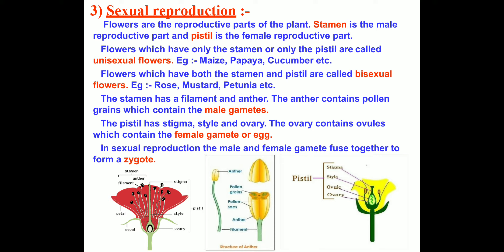Flowers which have both the stamen and the pistil are called bisexual flowers. In other words, flowers which have both reproductive parts on the same flower are called bisexual flowers — for example, rose, mustard, petunia, and china rose.